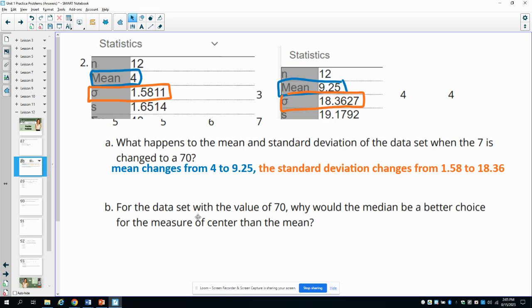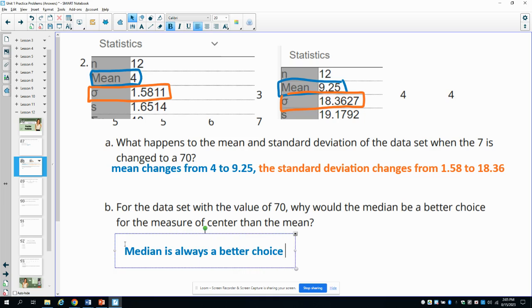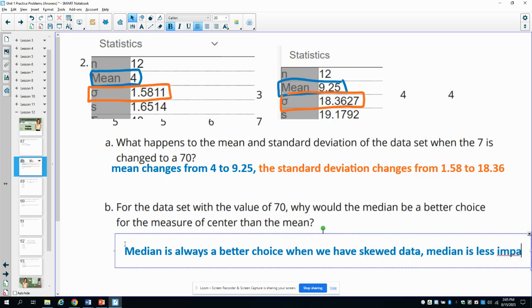And then B says for the data set with the value of 70, why would the median be a better choice for the measure of the center? So the median is always a better choice when we have skewed data because the median is less impacted by outliers.